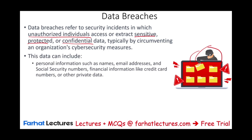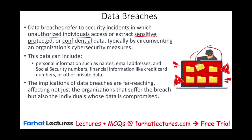The data accessed can include personal information such as names, email addresses, social security numbers, and financial information, as well as more important information like proprietary information, intellectual information, and security information. The implications of data breaches are far-reaching because it could affect a company's proprietary assets or its competitive edge.